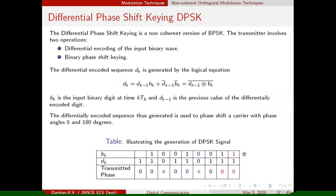The first row of the table is the binary data, the second row is the differentially encoded data, and the third row is the transmitted phase based on the differentially encoded data. This is how we were developing the DPSK transmitter, and while analyzing any DPSK signal, we analyze for two time intervals: the previous and the current time interval.